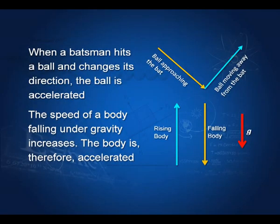Let us take another example from the game of cricket. The bowler throws a ball; the batsman hits it in some other direction. The ball is coming in one direction and going in another direction — that means the ball is accelerated. Why? Because there is a change in direction. A change in direction or a change in magnitude or both means the motion is accelerated. So the ball approaching the bat and the ball moving away from the bat — the direction changes, and therefore the motion is accelerated. Why? Because there is the force of the bat.